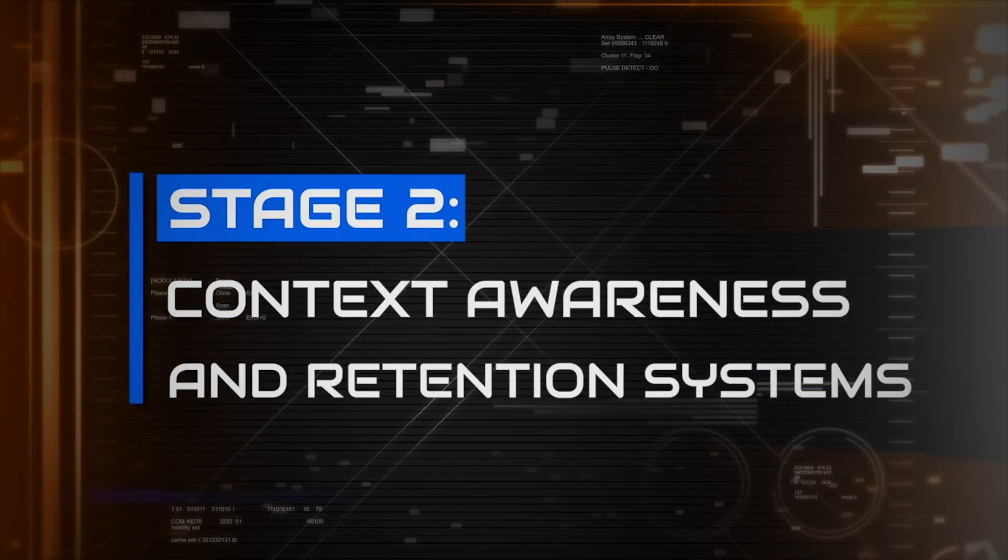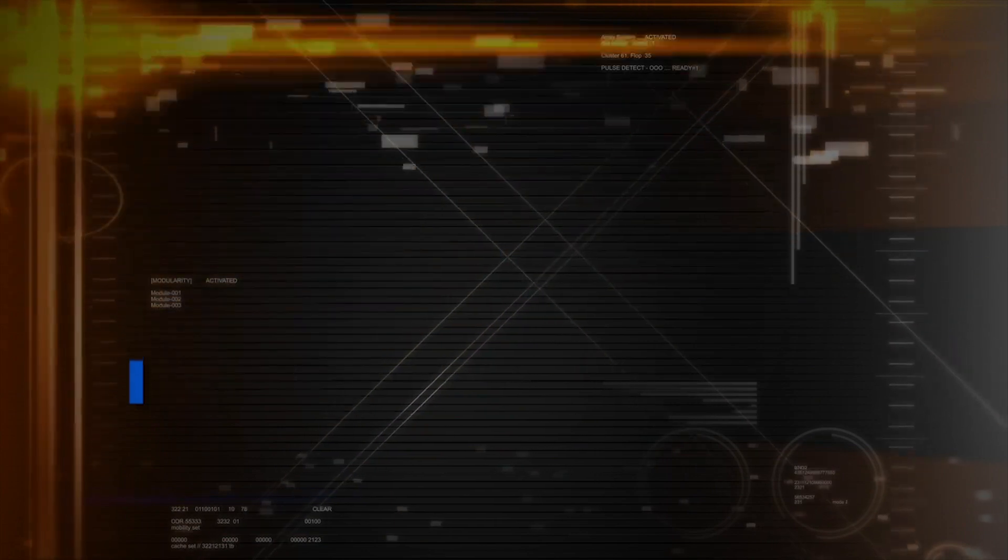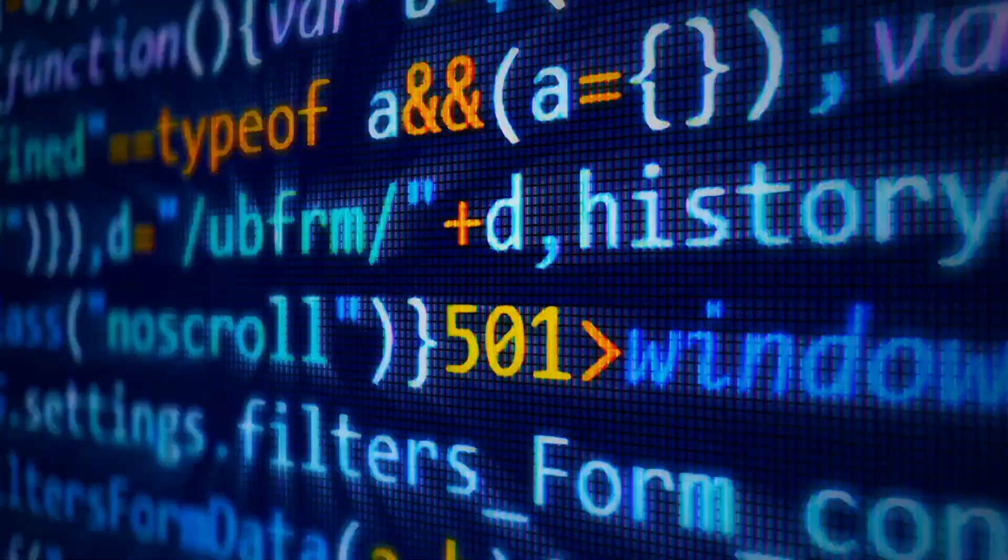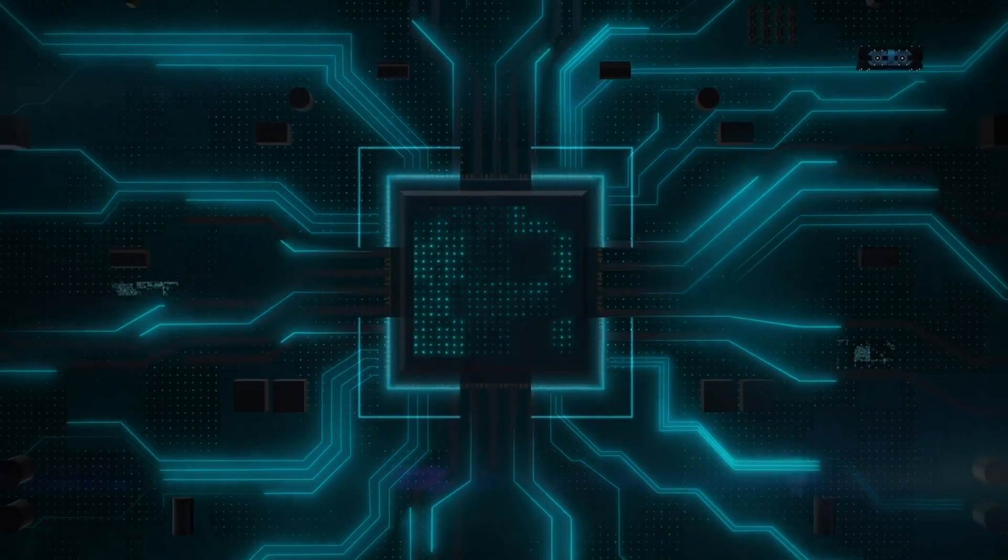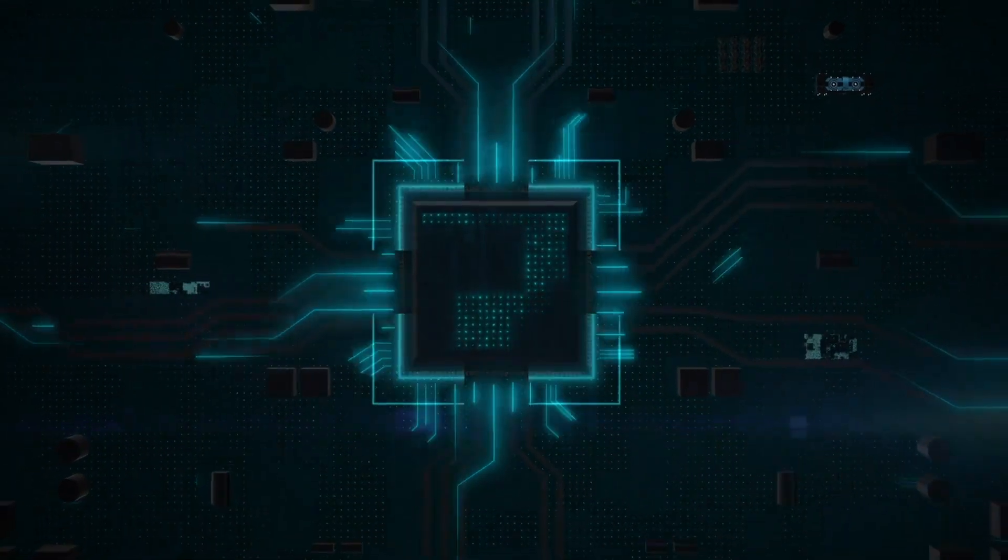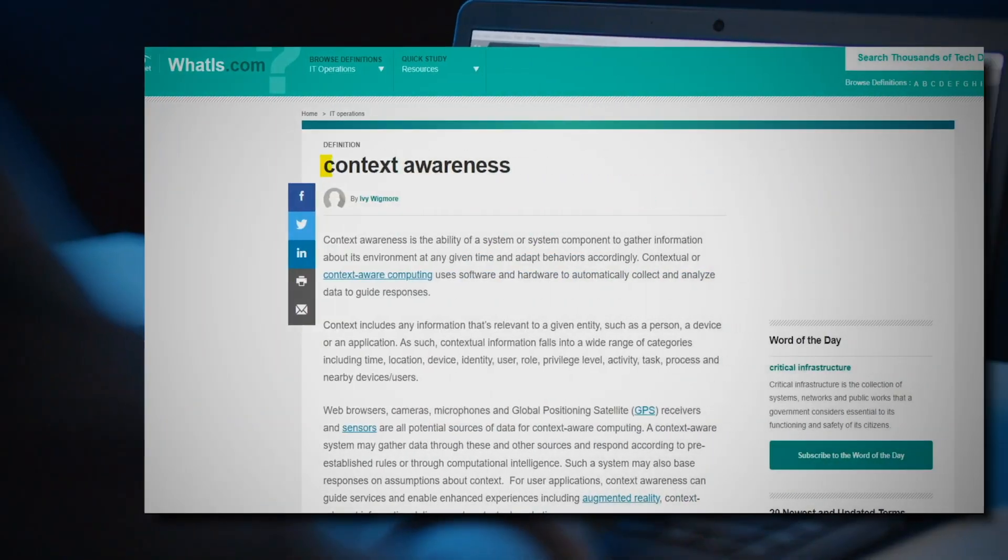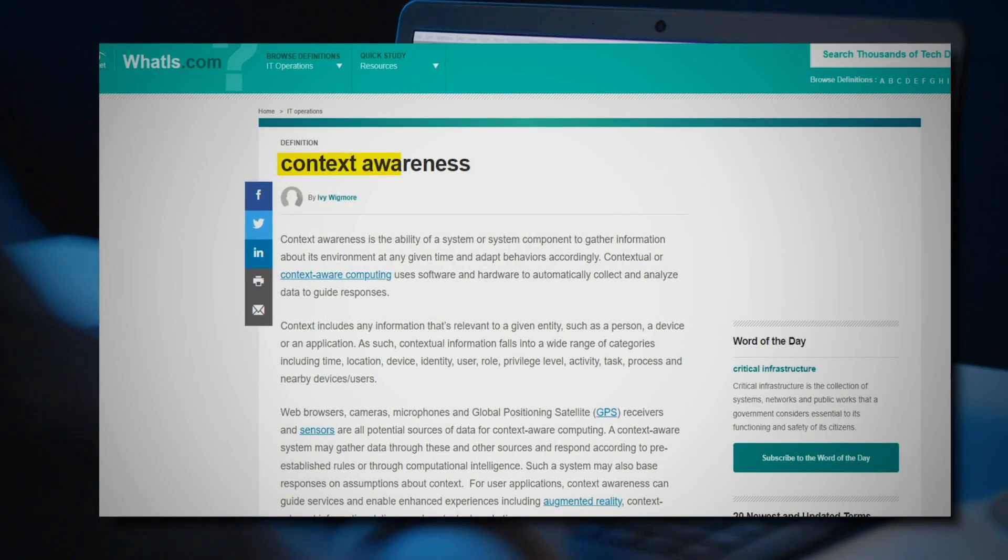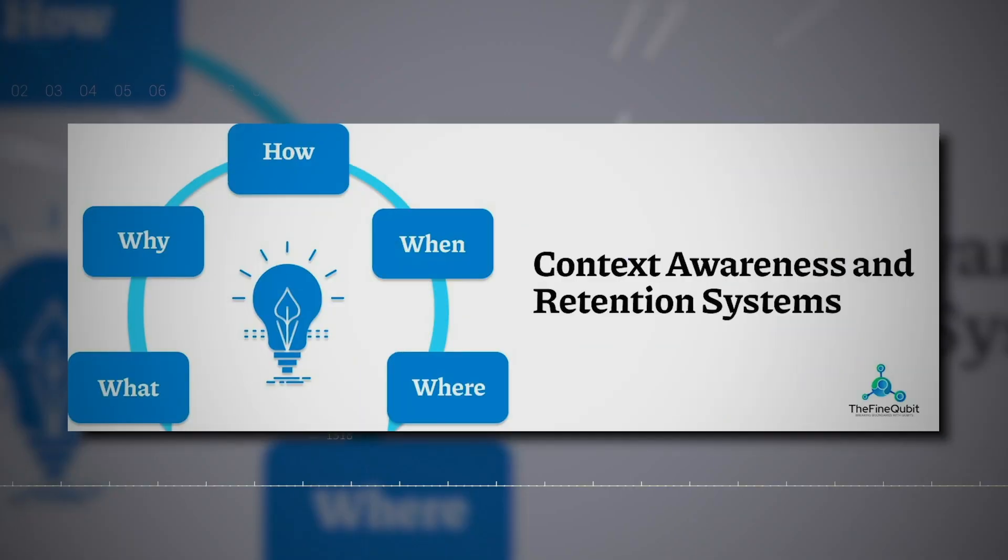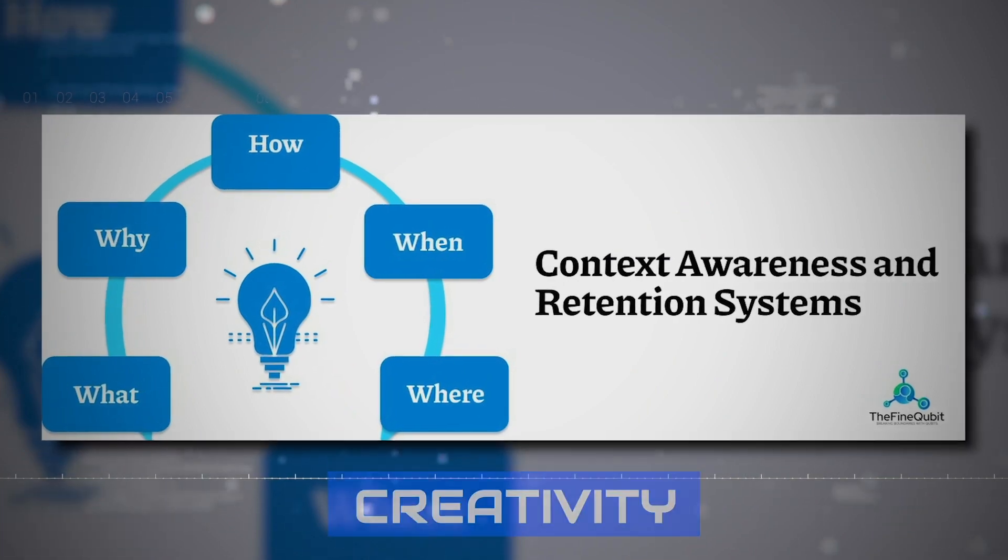Stage 2: Context Awareness and Retention Systems. A remarkable jump from the rule-based systems, AI developed to a stage where it can retain previously told information for future events. Rather than following a predefined set of rules, these systems respond and generate results based on current scenarios. The biggest plus of these systems is creativity.